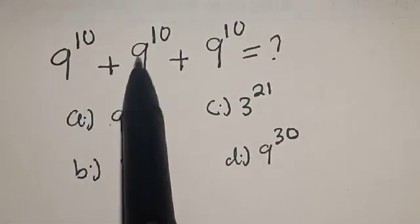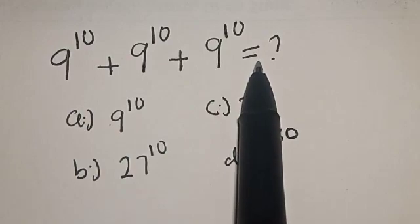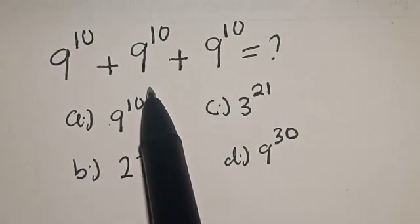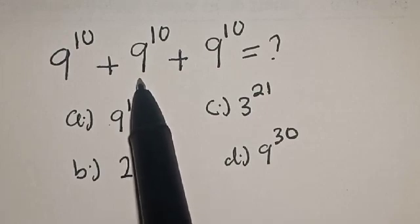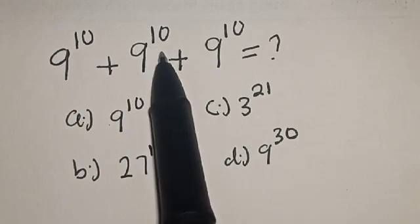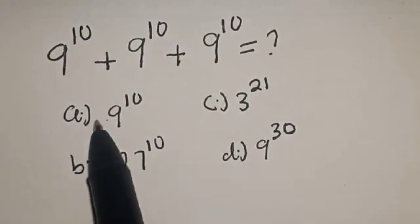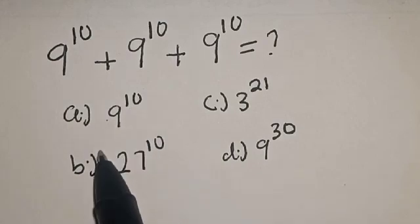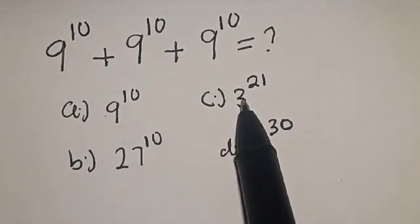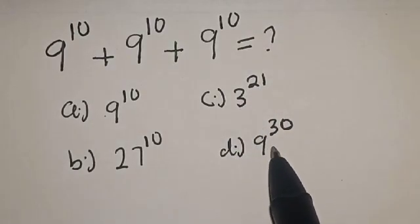9 raised to power 10 plus 9 raised to power 10 plus 9 raised to power 10 is equal to what? Hi everyone, welcome to my class. In this class, we want to solve this nice math problem — sum of powers — with the following options: A is 9 raised to power 10, B is 27 raised to power 10, C is 3 raised to power 21, and D is 9 raised to power 30.